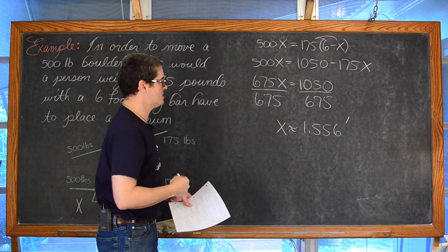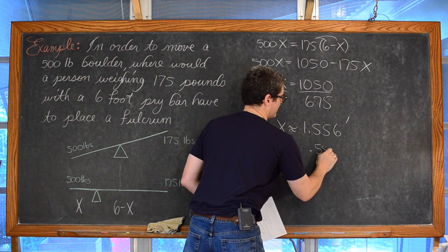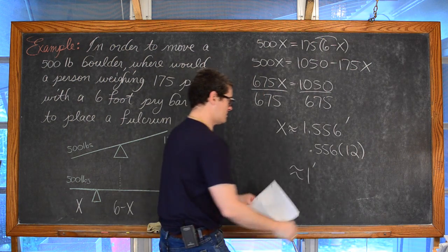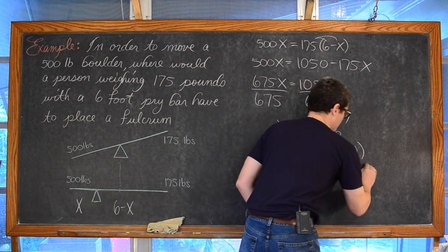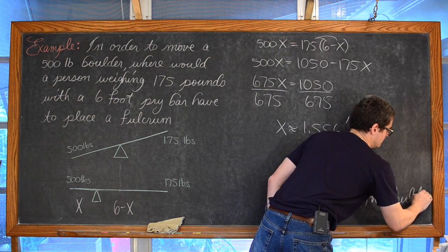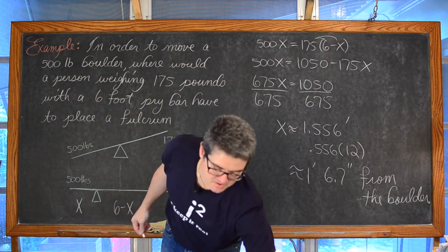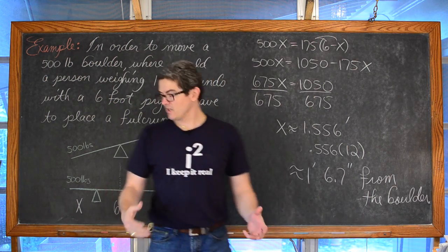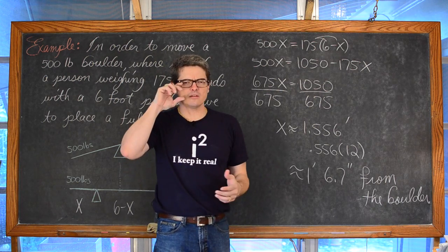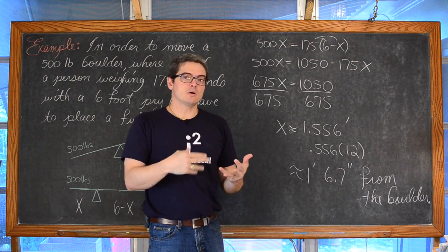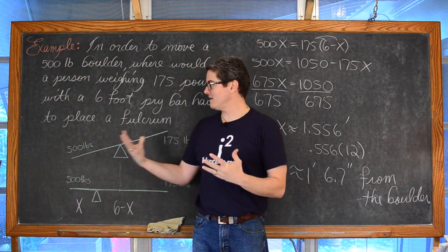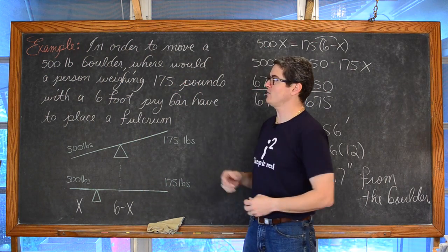To convert: 0.556 times 12 gives approximately 6.7 inches, so the fulcrum must be placed about 1 foot and 6.7 inches from the boulder. These examples are not complicated, but I didn't want to just produce the equation without you understanding what a moment is, what mass is, and the difference between mass and weight.